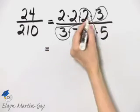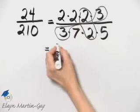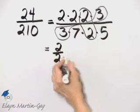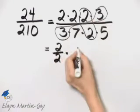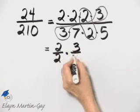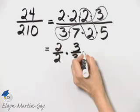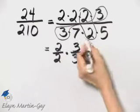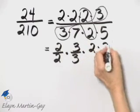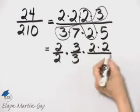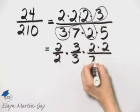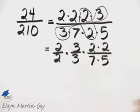I'll write this as 2 over 2 times 3 over 3, and then we'll talk about why I'm writing it this way, times 2 times 2 left in the numerator and 7 times 5 left in the denominator.